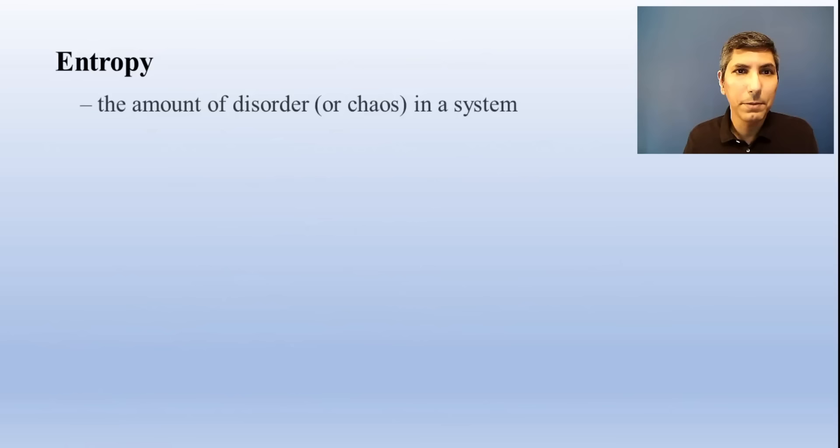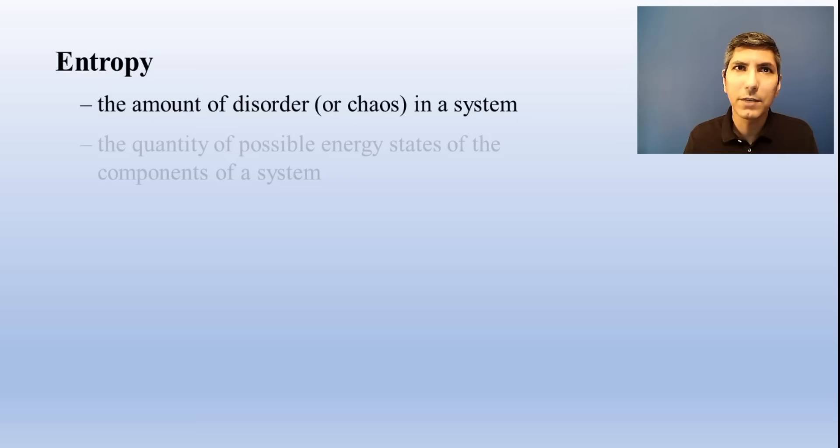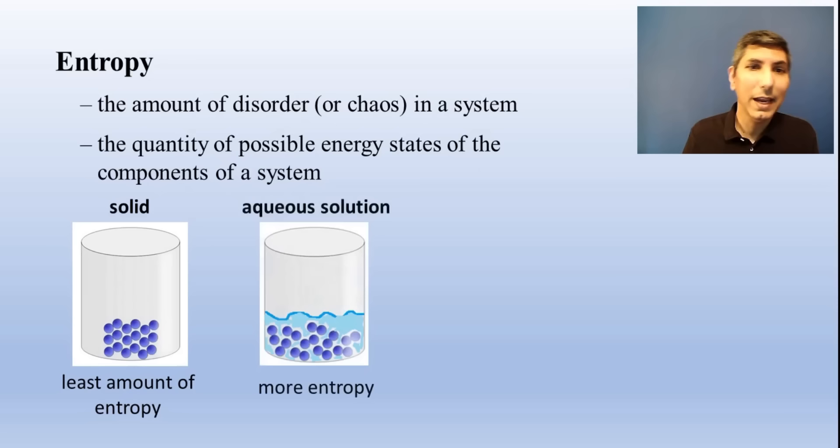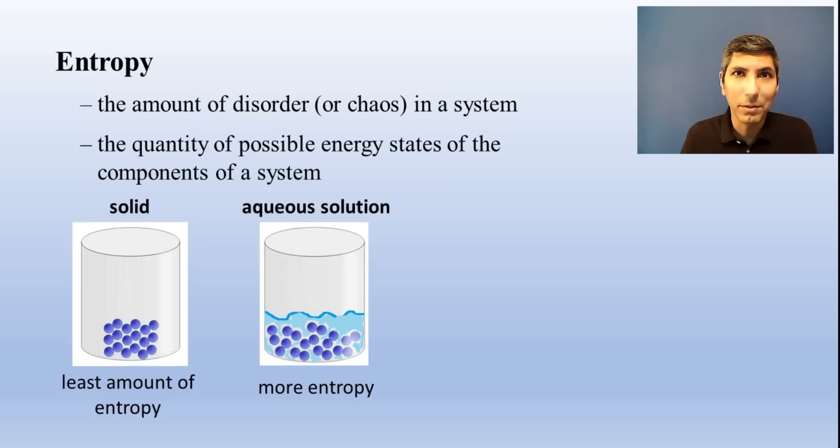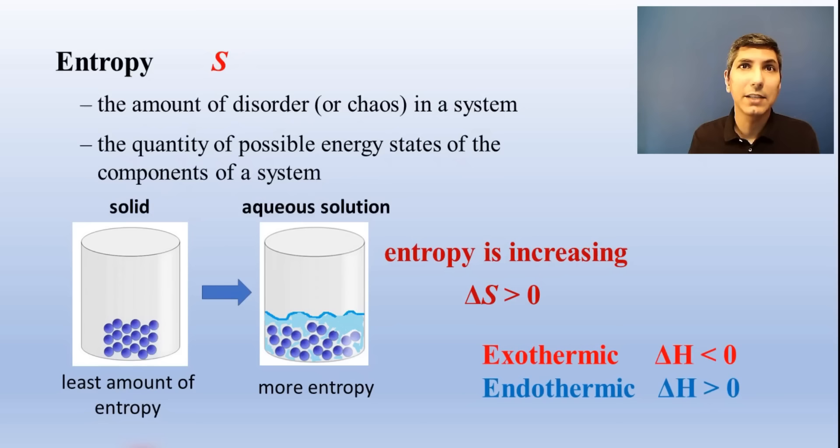We can talk about the entropy and enthalpy changes when a substance dissolves. Entropy is the disorder of molecules in a system, or more specifically, the total number of possible energy states of a material. When a substance dissolves, it goes from being a nicely ordered solid to being a much more chaotic system of ions or molecules swimming around all over the place. That's why we say that dissolving a substance usually involves an increase in entropy. S represents entropy, so when entropy is increasing, the delta S is positive. If we carry this process and heat is released, then it's exothermic and delta H is negative. If heat is absorbed and the surroundings get colder, it's endothermic and delta H is positive.